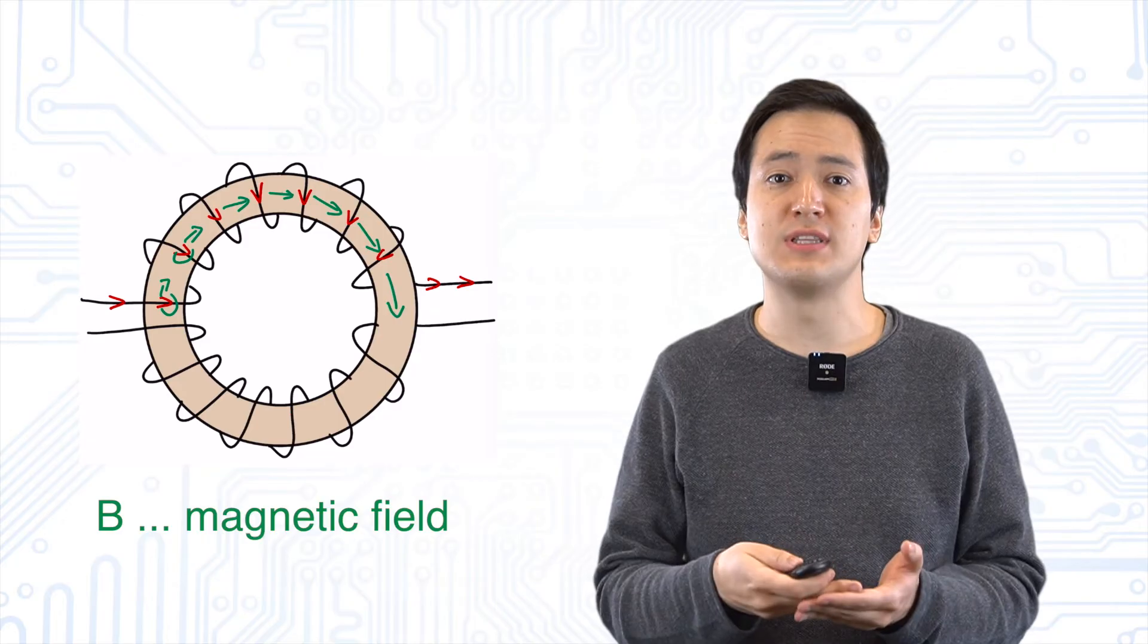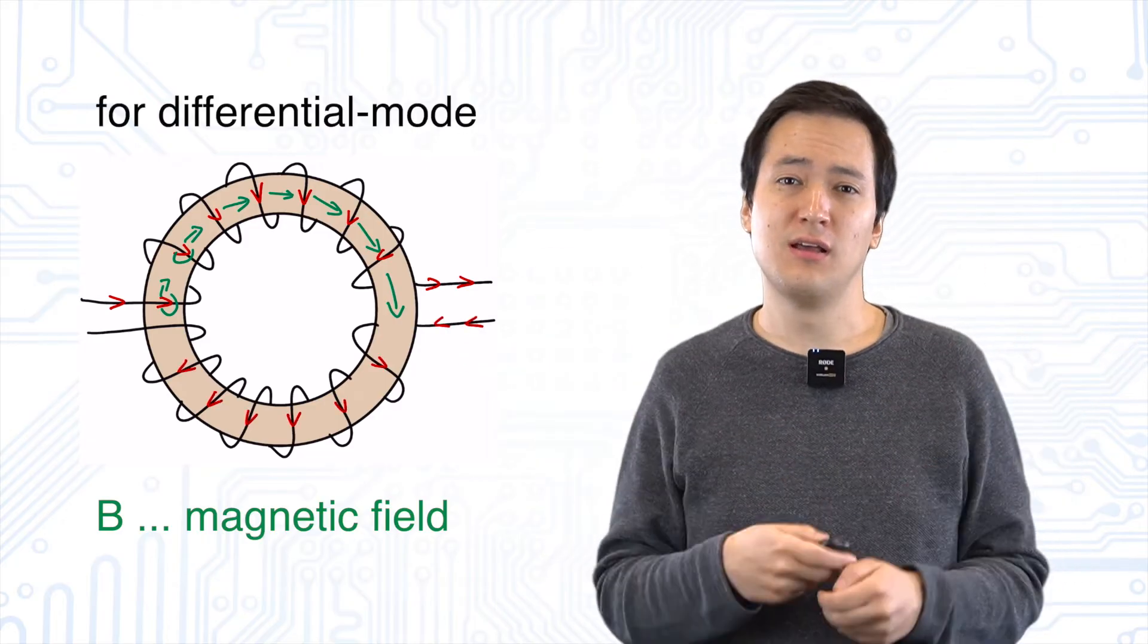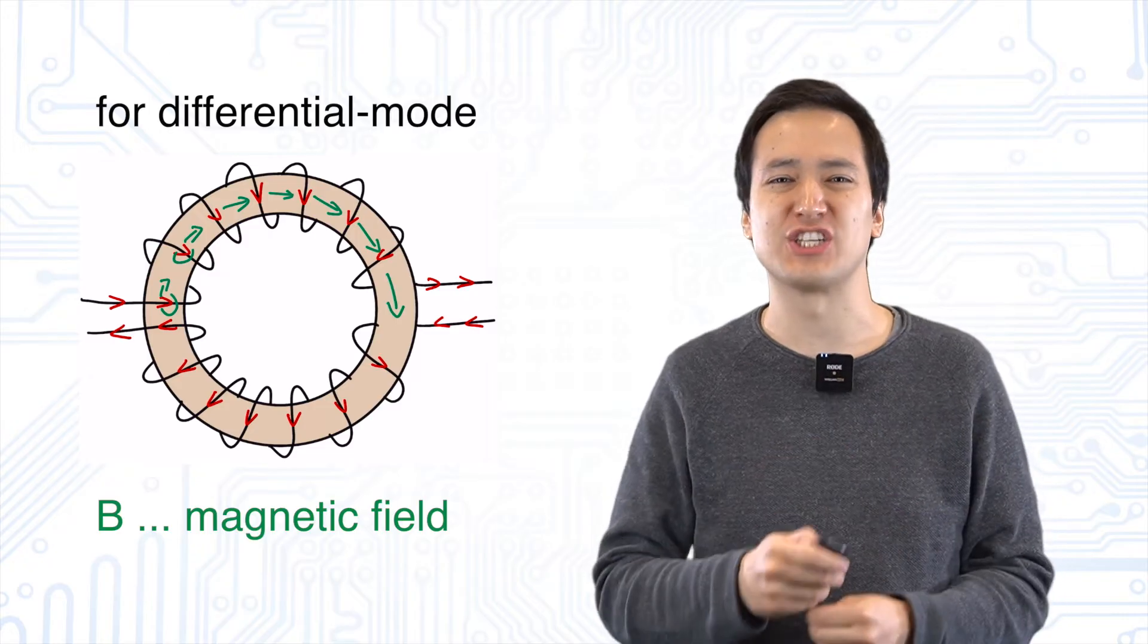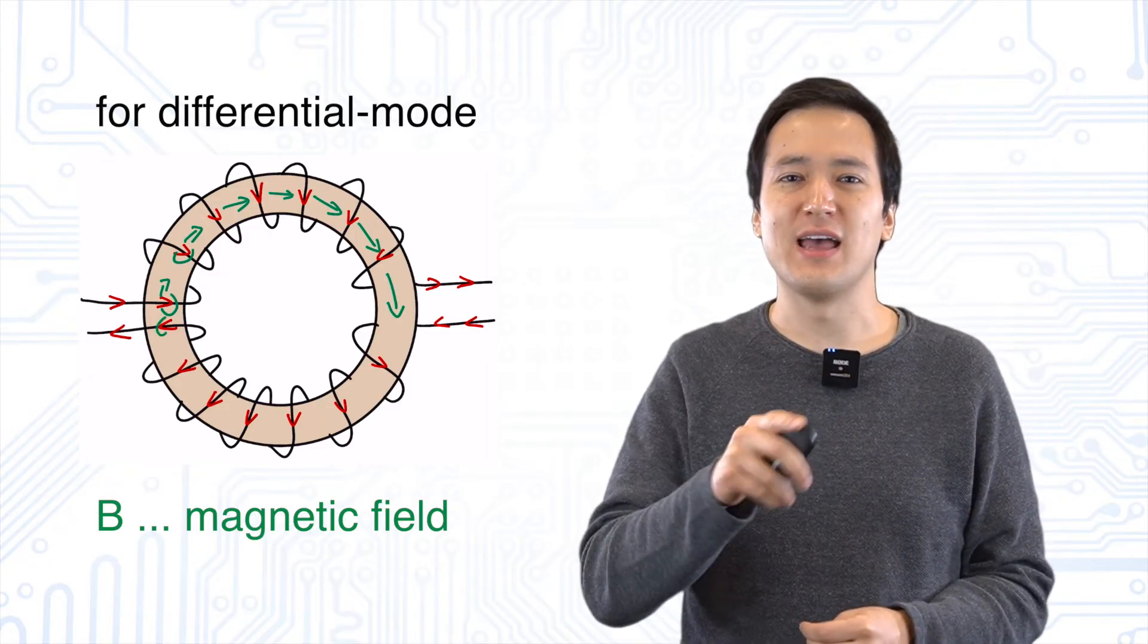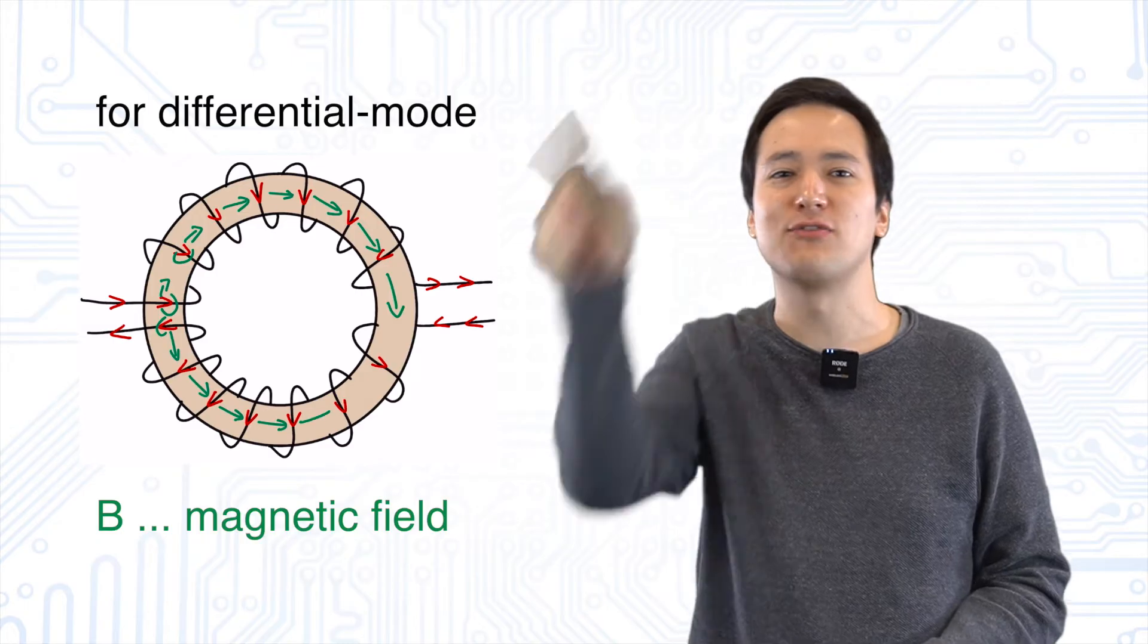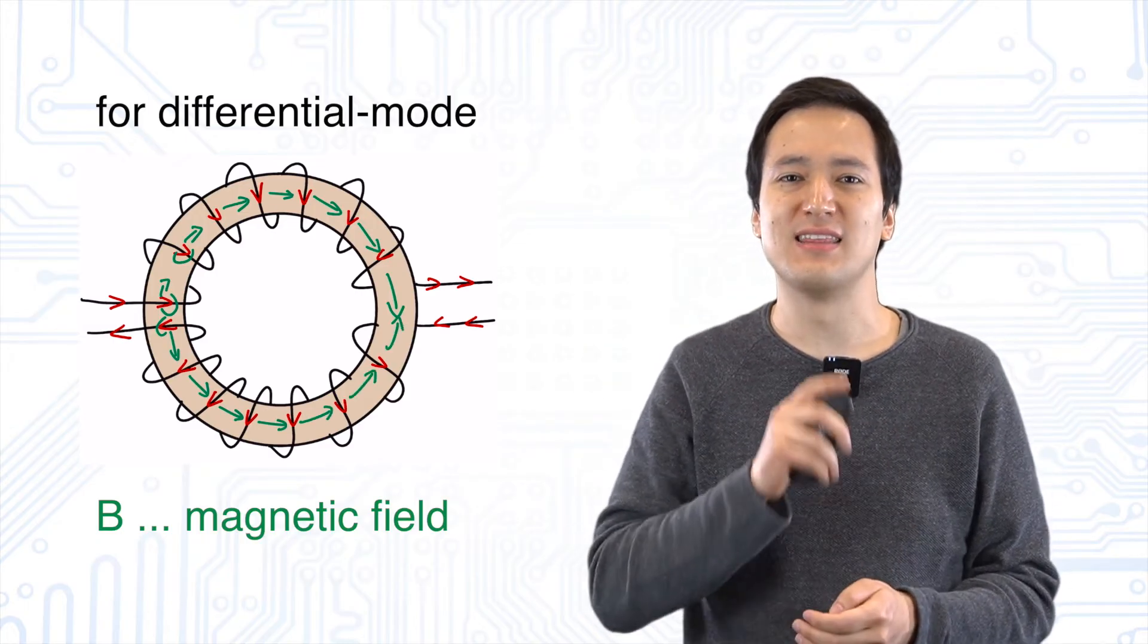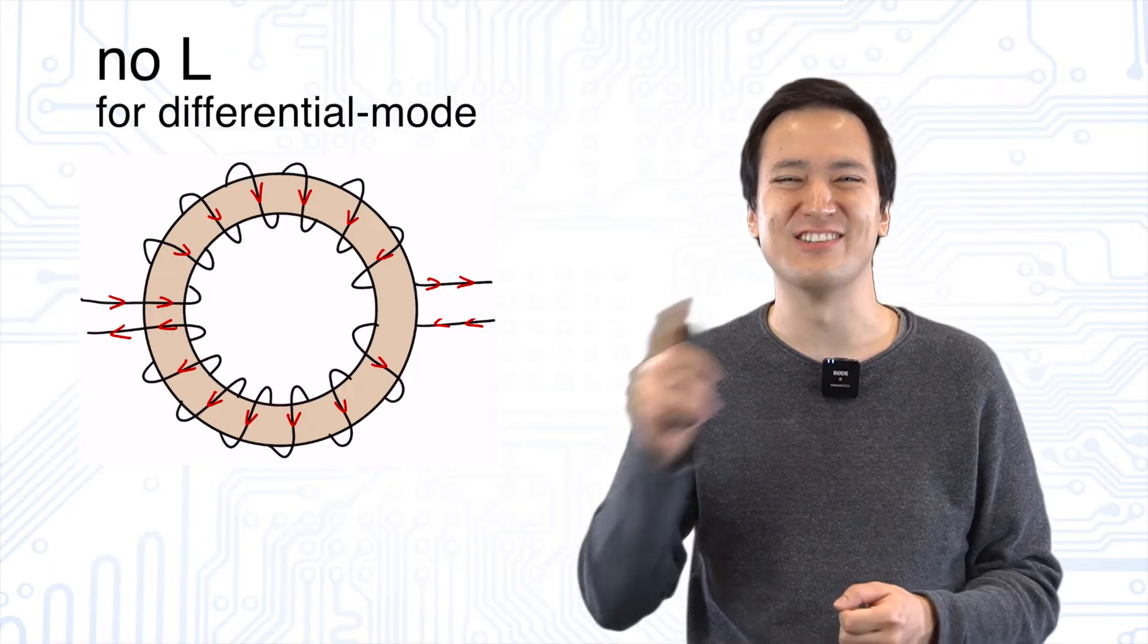And what happens to the desired differential mode signal? In this case the current in the second wire flows in the other direction. As a result a counterclockwise magnetic flux flows inside the ferrite core. Both magnetic fluxes then cancel each other out and the signal can pass the choke.